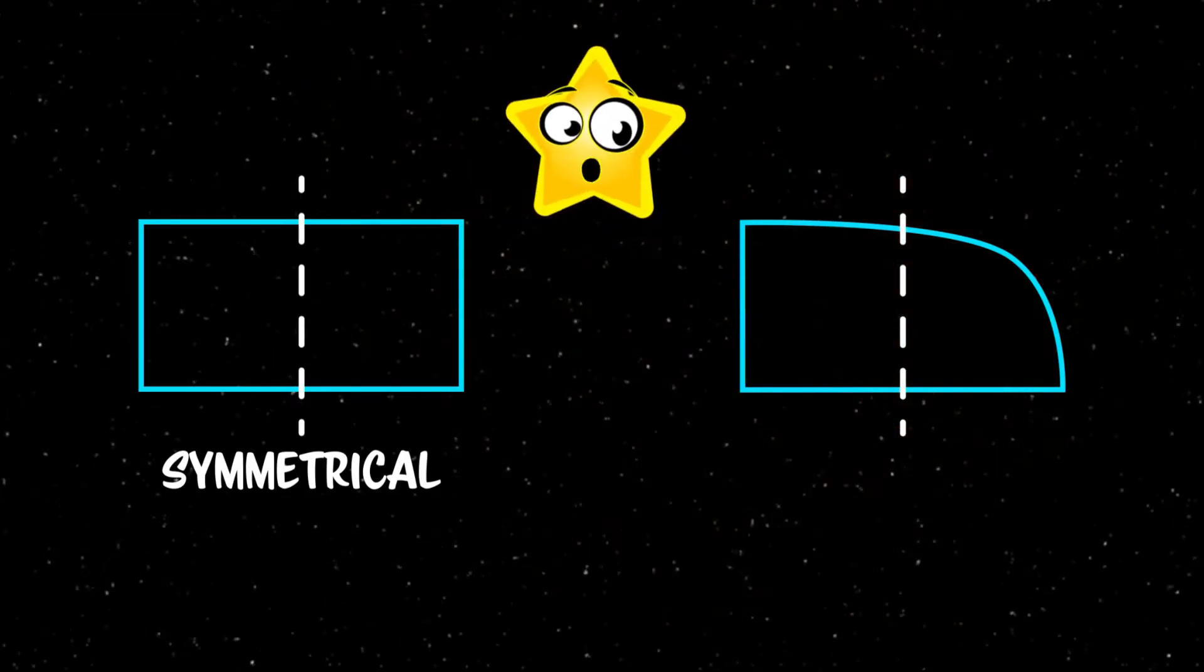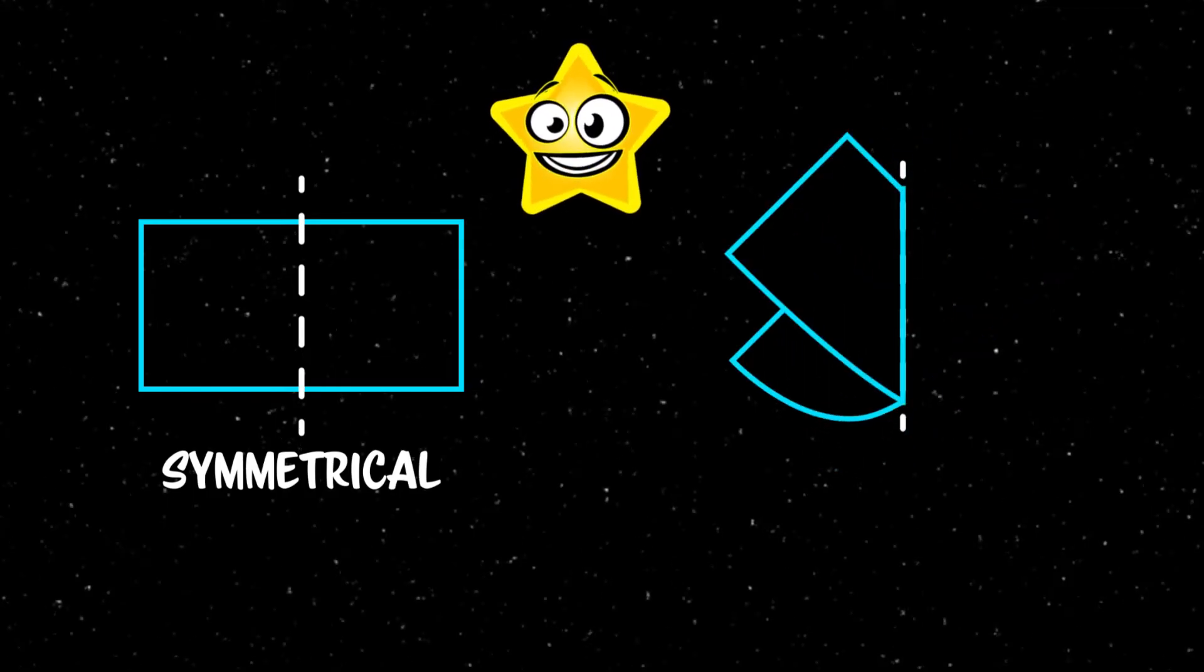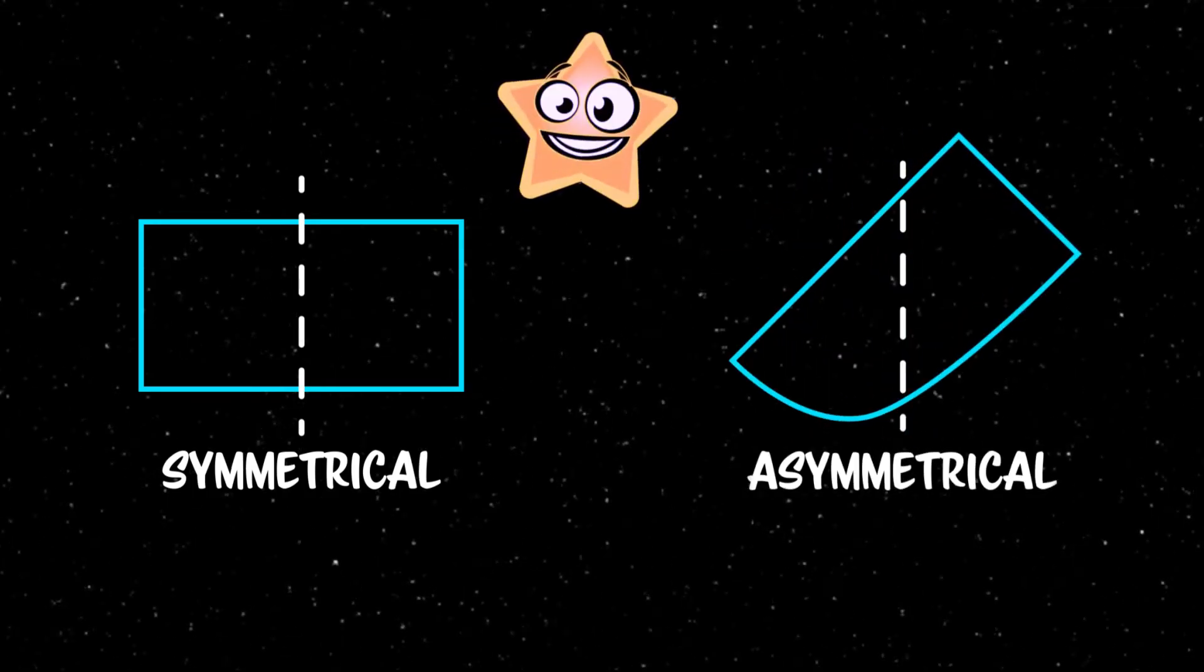However, when we do the same with this shape, the sides do not match up. Not even if we move the line around. Shapes that don't have a line of symmetry are called asymmetrical.